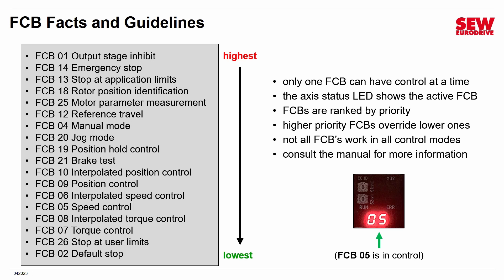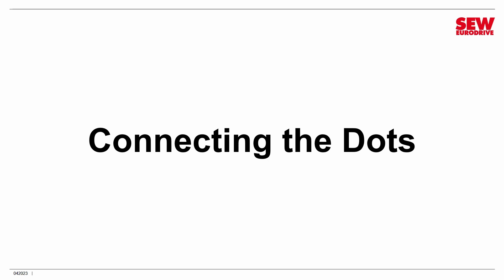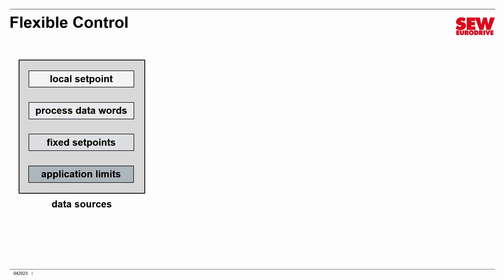If you want to know more about FCBs, take a look at the manual — there's a whole section on them. Now, what about connecting the dots? FCBs do the work, but they have to get their information and guidance from somewhere. This is why the Movi-C product is so incredibly flexible, because the ability to connect the dots is extremely flexible. We have multiple places you can get data to feed the FCBs: there can be local setpoints and fixed setpoints you set up in the VFD, process data words coming over a fieldbus from a controller or PLC, and various kinds of application limits that keep things within constraints.